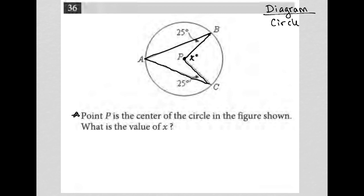Anytime I see a circle with a weird shape in it, I've learned to make it into a shape that's not weird. So just by drawing that one line there, I can look at this as a triangle here and a triangle there. Now, what do I know about these triangles? Well, this is 25 degrees here, and if that's 25 degrees, this is also 25 degrees — because I have a radius here and a radius there, and radii have to be the same length, which means triangle APB is an isosceles triangle.